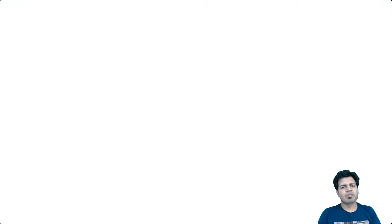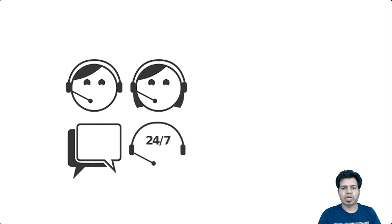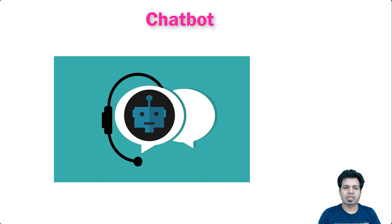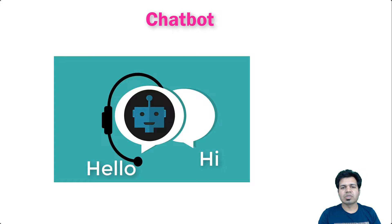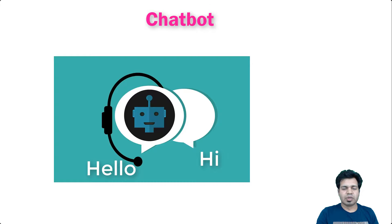Before we proceed further, let's understand what exactly a chatbot is. A chatbot is essentially a computer program with some artificial intelligence capabilities to understand a user's textual inputs and provide responses to them — the conversation happens just like talking to another human being. According to the Oxford dictionary, a chatbot is a computer program designed to simulate conversations with human users, especially over the internet.